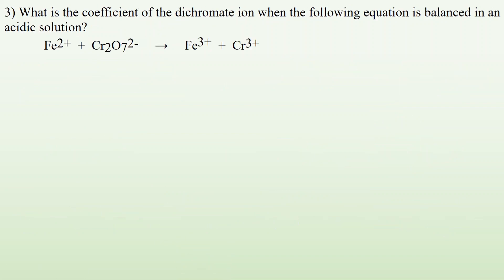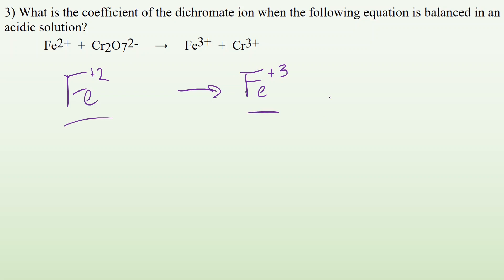Number three: what is the coefficient for the dichromate ion when the following equation is balanced in an acidic solution? Let's split it into two half-reactions. Starting with Fe²⁺ → Fe³⁺: balance everything that isn't oxygen or hydrogen — iron is balanced, one on each side. Balance oxygens: zero — check. Balance hydrogens: zero — check. Balance the charges: plus two on the left and plus three on the right, so I add one electron to the right to make both sides plus two.